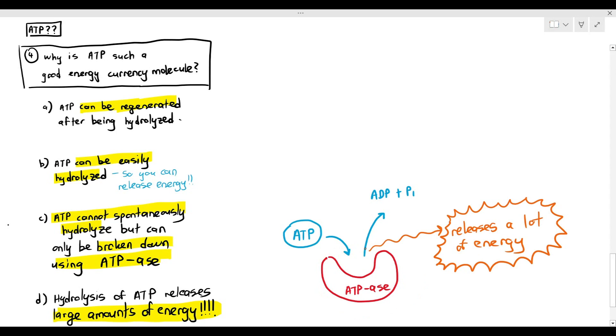And the most important thing is ADP and phosphate can be joined together to regenerate the ATP molecule. This is why ATP is such a good energy currency molecule.